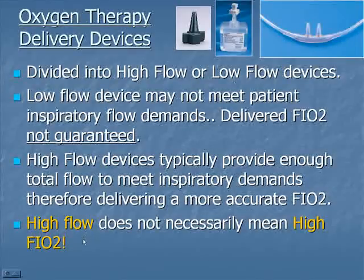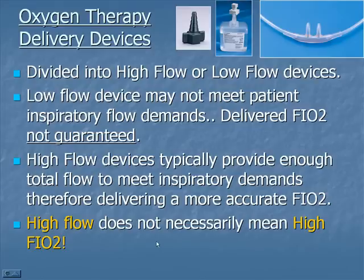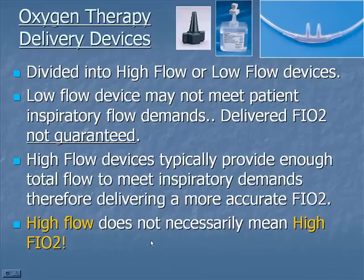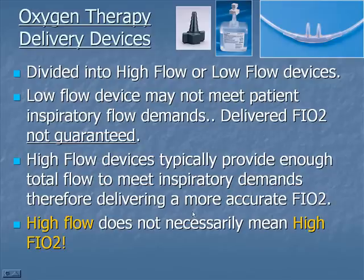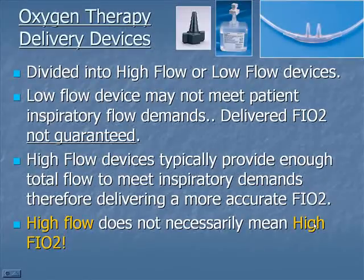An important thing to remember is that high flow does not necessarily mean high FiO2. A 24% Venturi device is a high flow device, but it delivers a low FiO2. When we refer to high flow devices, we mean giving enough flow through the delivery system to limit any air entrainment — that's how we guarantee the FiO2. As you go up on FiO2 with some high flow devices like a jet nebulizer, they become less efficient because the insufficient total flow may not meet the patient's demands.